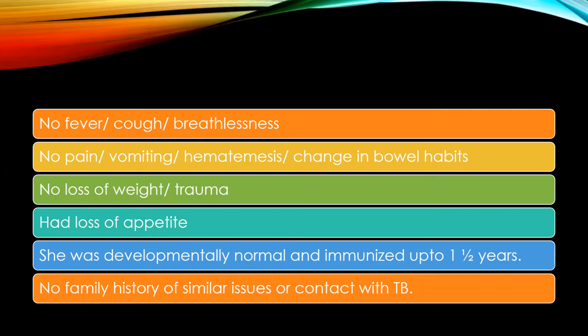On admission, her symptomatology: there was no fever, cough or breathlessness. There was no pain, hematemesis or change in bowel habits. No loss of weight or trauma was recorded. She had minimal loss of appetite. She was developmentally normal and immunized up to one and a half years of age. There was no family history of similar issues or contact with any TB patient.